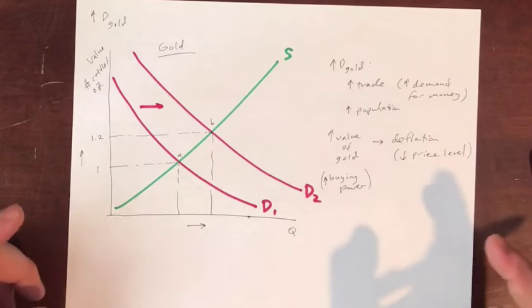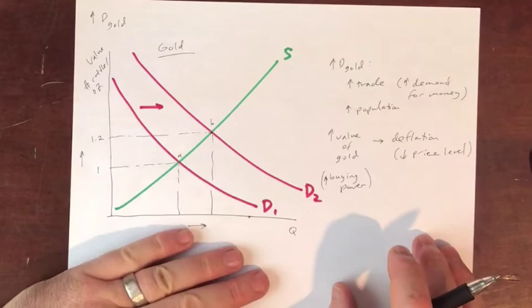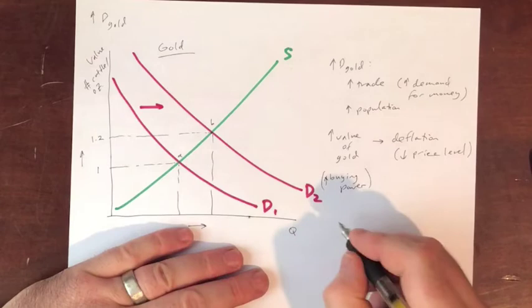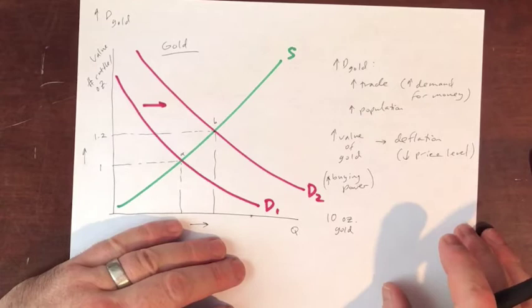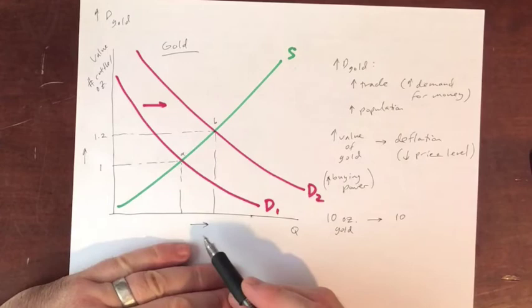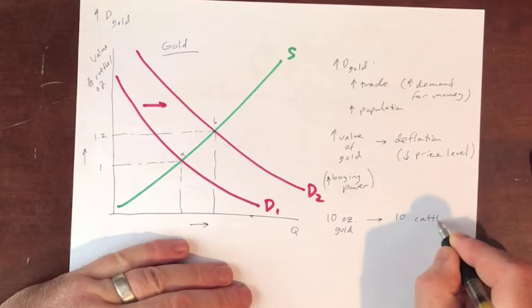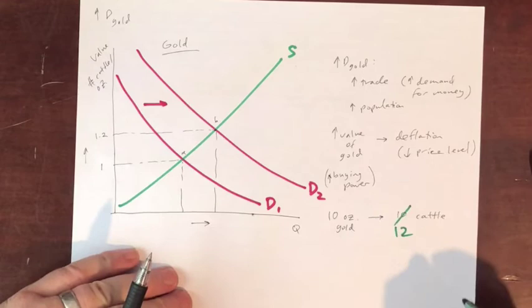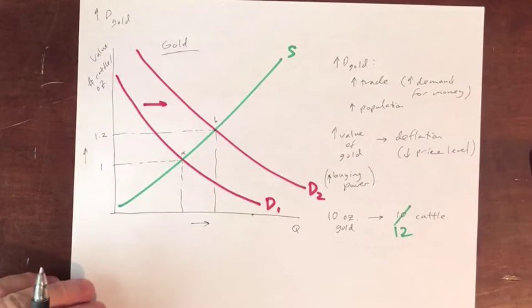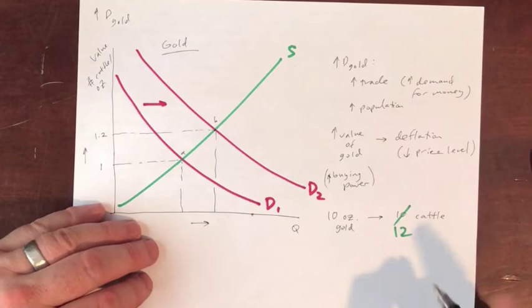This demand shift moves us from equilibrium point A to point B, where the quantity and value both increase — going from 1 to 1.2 cattle per ounce. This increase in the value of gold is deflation: a decrease in the price level. With 10 ounces of gold, before you'd get 10 cattle; now at 1.2 per ounce, your 10 ounces buy 12 cattle. Each ounce goes further than before. That is a falling price level — deflation.